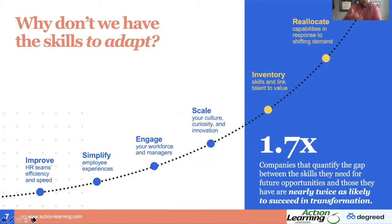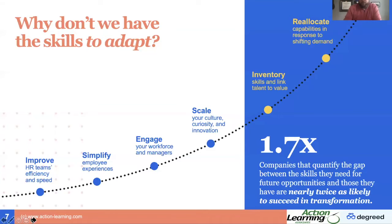This study came from the Brandon Hall group, and they found that companies that quantify the gap between the skills they need for future opportunities and those they currently have are nearly twice as likely to succeed at digital transformation. I would imagine the same is true for our leadership teams that are now virtual. If they're thinking through — no one could have predicted a global pandemic — but what skills are they most going to need to propel the company forward if things shift and change rapidly?